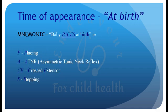Reflexes present at birth can be remembered by the mnemonic 'Infant in Midland Equilibrates with Parachute Soon — Baby Paces at Birth.' These are the reflexes which first appear at birth: P stands for Placing reflex, A for Asymmetric Tonic Neck Reflex, CE for Crossed Extensor reflex, and S for Stepping reflex.